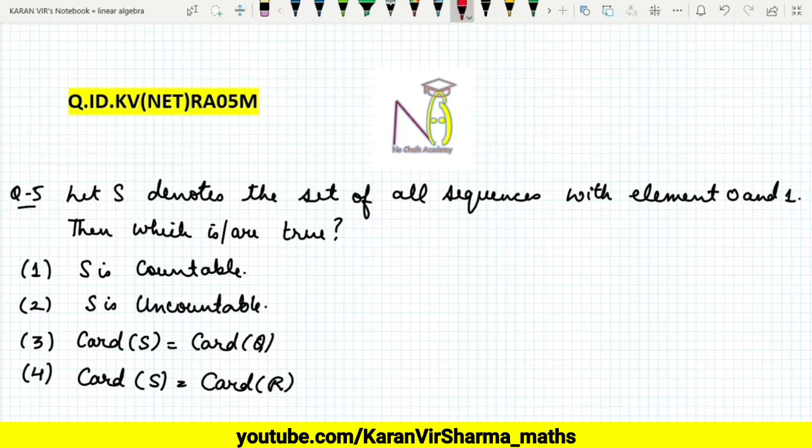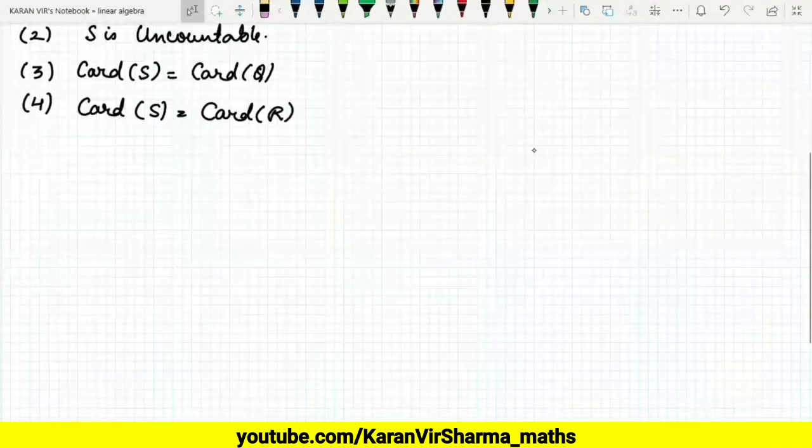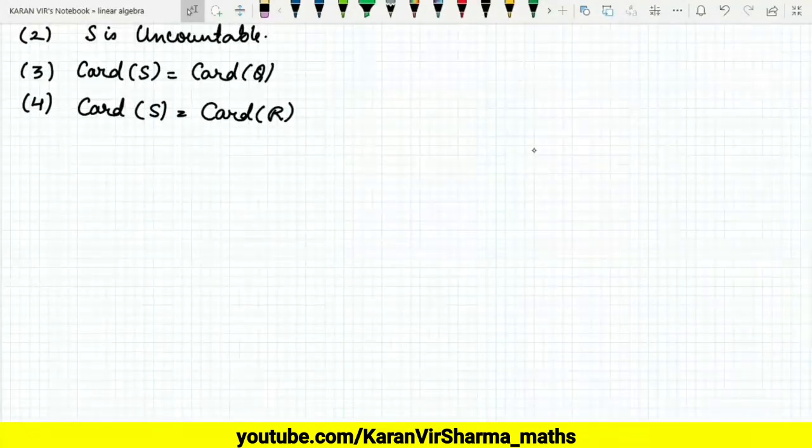Before discussing this question, we should know some important results. The results are: the cardinality of naturals is aleph-naught, which denotes countable.